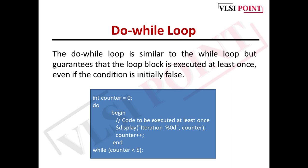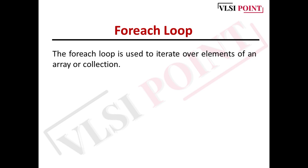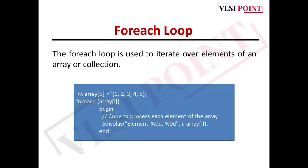The do-while loop is commonly used for user input validation or executing a block of code at least once. Next is the for-each loop, which is specifically designed for iterating over elements in an array or collection. It simplifies iterating through arrays and is commonly used for data processing and manipulation tasks. For example: int array[5] = {1, 2, 3, 4, 5}; foreach (array[i]) { $display(i, array[i]); }. Here i is the index and array[i] is the actual value at that index.